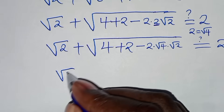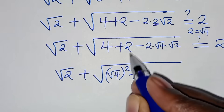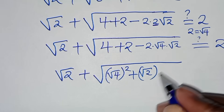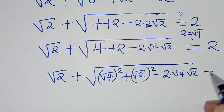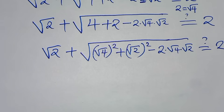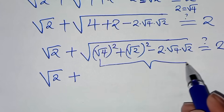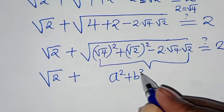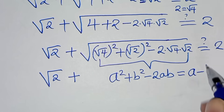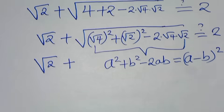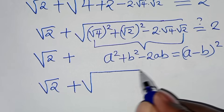We can express 4 as square root of 4 squared and 2 as square root of 2 squared, then subtract 2 times square root of 4 times square root of 2. This part is in the form a squared plus b squared minus 2ab, which we can express as a minus b squared. So this becomes square root of 4 minus square root of 2, all squared, and taking the square root gives square root of 4 minus square root of 2.